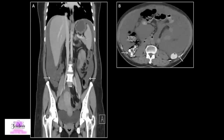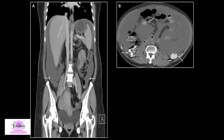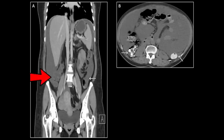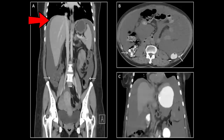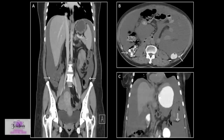The paracolic spaces or gutters shown by the arrows in figures A and B are located lateral to the ascending and descending colons. The right paracolic gutter is larger than the left and communicates freely with the right subphrenic space. On the left, the phrenicocolic ligament indicated by the hollow arrow in figure C partially limits the communication between the left paracolic gutter and the left subphrenic space. However, the paracolic gutters communicate freely with the pelvic spaces.